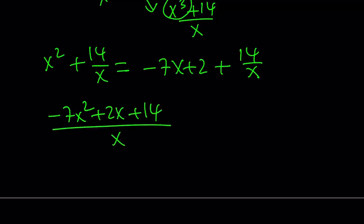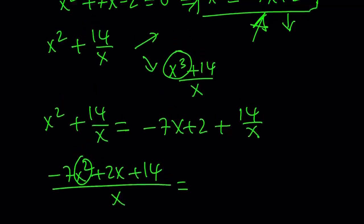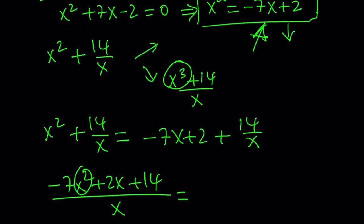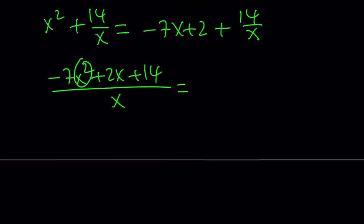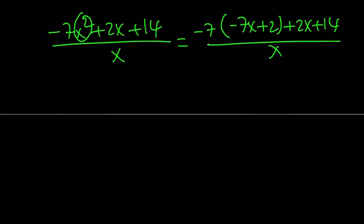Notice that I have a quadratic expression here. Let's go ahead and replace x squared with something again. This method involves constant substitution of x squared. Now replace x squared with negative 7x plus 2, and then you're going to continue with 2x plus 14, all divided by x. And then we have to distribute. 49x minus 14 plus 2x plus 14.